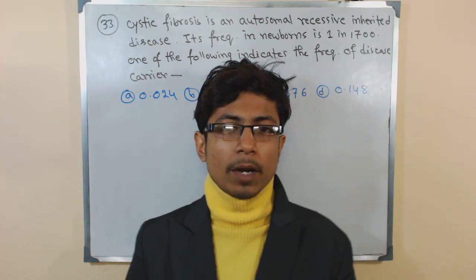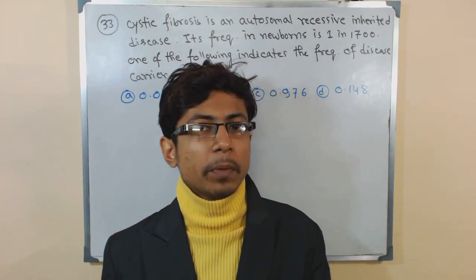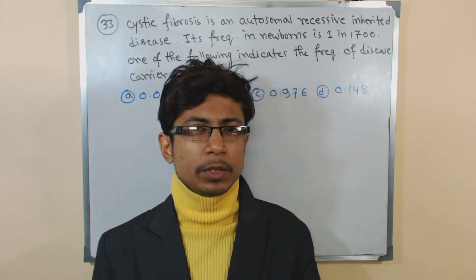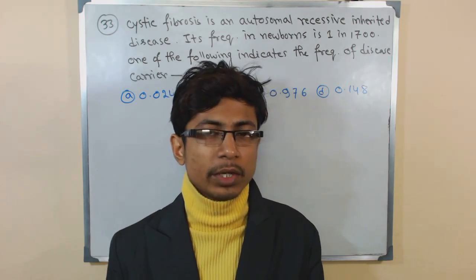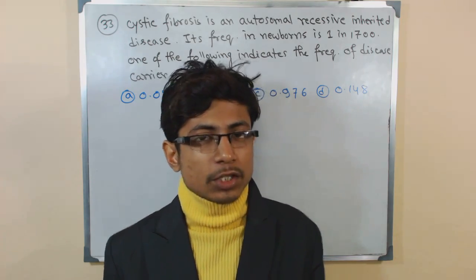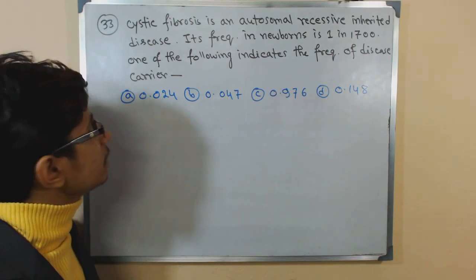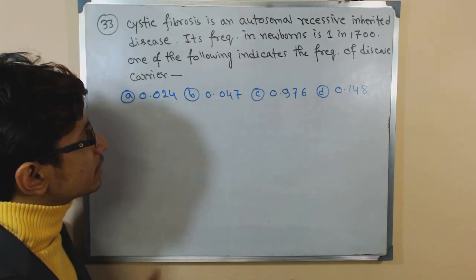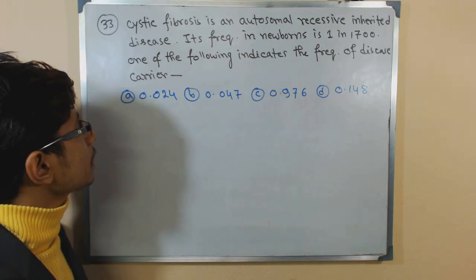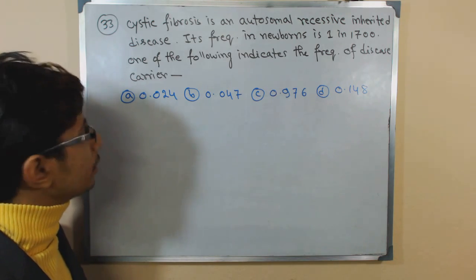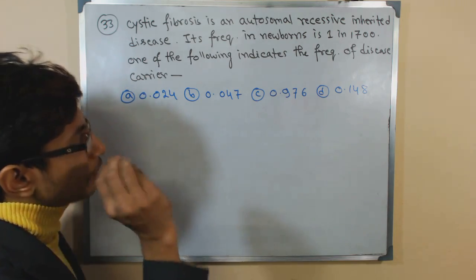Welcome again. Another problem from population genetics — we are going to use Hardy-Weinberg equilibrium, in this case a slightly advanced mode with certain modifications. Let's read the problem: cystic fibrosis is an autosomal recessive inherited disease; its frequency in newborns is 1 out of 1700. One of the following indicates the frequency of the disease carrier.